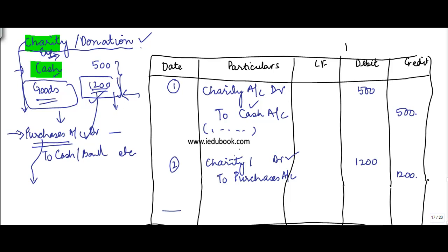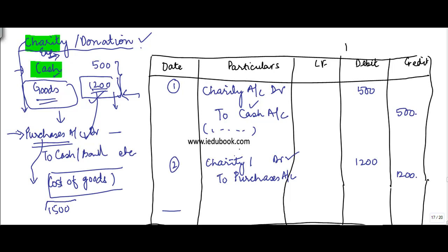Please note that the purchases account has to be credited for the cost of goods only — you do not add on your profit margins. Suppose these goods you were buying for ₹1200 and selling for ₹1500 — what you will credit here is only ₹1200 and not ₹1500.